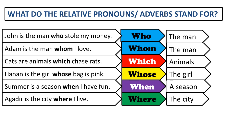Where do relative pronouns and adverbs come in the sentence? The relative pronouns and relative adverbs come immediately after the words they replace — that is, the words they stand for in the sentence.